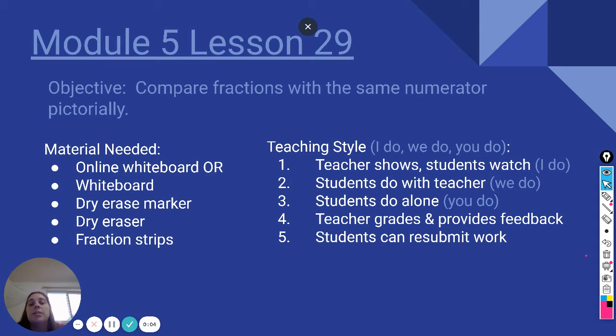Today we're doing Module 5, Lesson 29. The objective is to compare fractions with the same numerator pictorially, similar to what we did yesterday. Materials needed for today are online whiteboard or your whiteboard, dry erase marker and dry eraser. You may also want your fraction strips to help you reference.